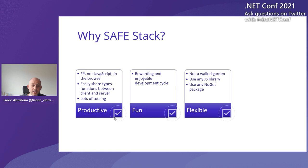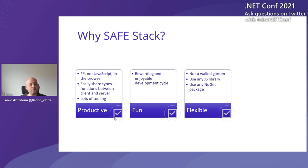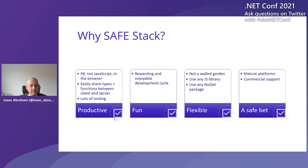SafeStack is flexible — it's more a set of libraries than a framework like Blazor. We put them together in a nice shrink-wrapped package, but you can use them however you want. You can use any JavaScript library; F-Sharp has nice interop with JavaScript through Fable. F-Sharp runs on .NET, so you can use any NuGet package on the server. And it's a safe bet — the pun not intended. It runs on mature platforms: JavaScript, React, .NET. You get commercial support from us, and training is available across Azure, .NET, JavaScript, and React. It's a platform that's not going anywhere.